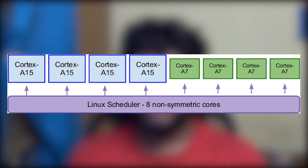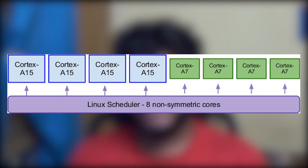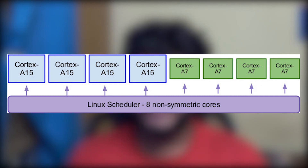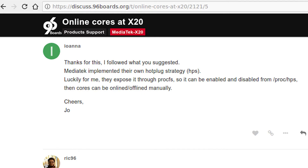Finally, there is heterogeneous multiprocessing (HMP), or global task scheduling — the most powerful big.LITTLE model. HMP enables all physical cores to be used simultaneously: threads with high priority or computational intensity are allocated to the big cores, while background tasks with less priority go to the little ones. This is used by most modern ARM-based processors following big.LITTLE, including the Helio X20. The preferred way to manage heterogeneous task scheduling for power savings is CPU hot plugging, which allows the OS to individually turn off cores. The X20 exposes this hot plug feature and it can be manually overridden, as discovered by a forum member at the 96boards forum.